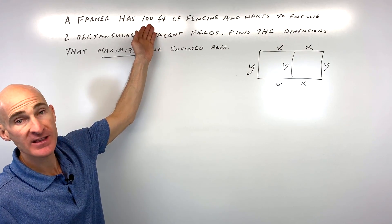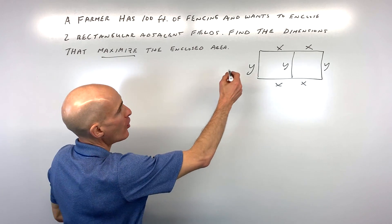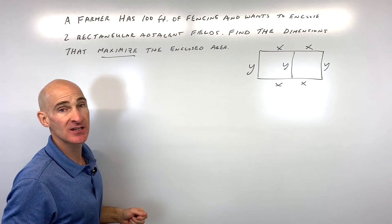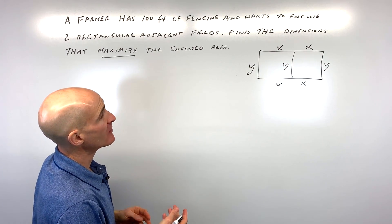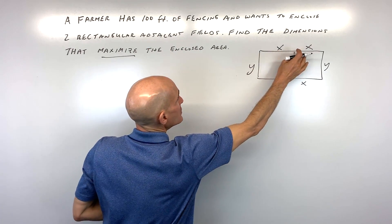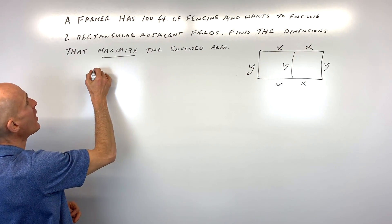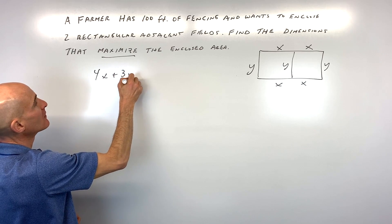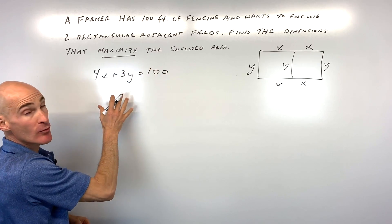And we've got 100 feet of fencing, so what we're going to do is we're going to add up all these lengths of fencing, and that's going to be representative of the total 100. So we're going to say 1, 2, 3, 4X plus 3Y equals 100. So that's like our perimeter equation.